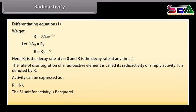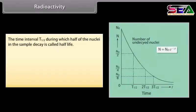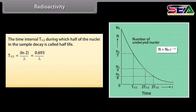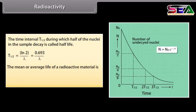The SI unit for activity is the becquerel: 1 Bq = 1 decay per second. The time interval T½ during which half of the nuclei in the sample decay is called the half-life: T½ = ln2/λ = 0.693/λ. The mean or average life of a radioactive material is τ = 1/λ.